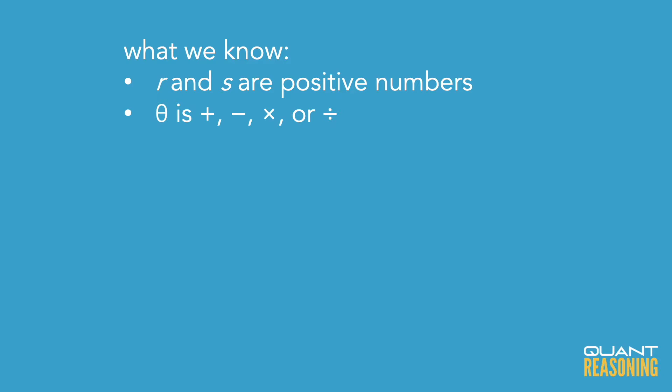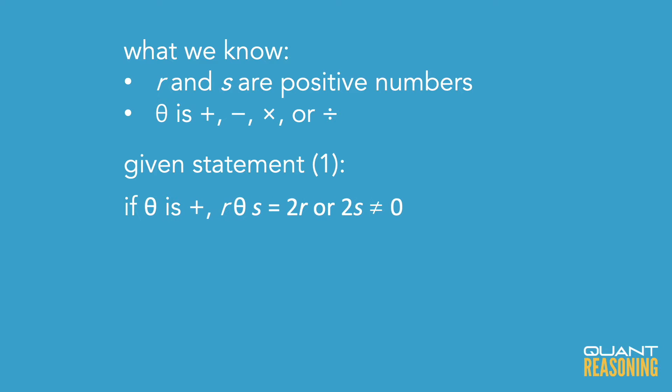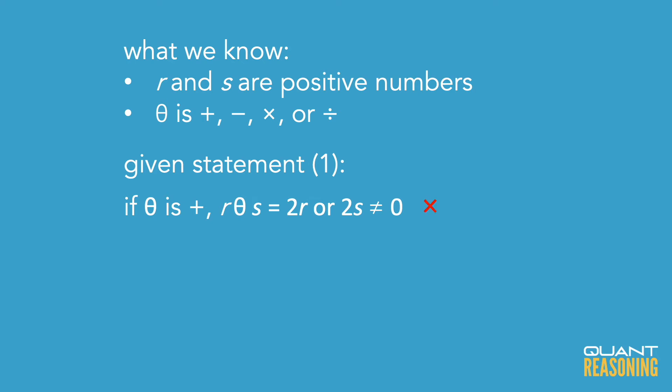Statement one tells us that if r equals s, then that symbol between r and s would make it zero. So what could that symbol be? Could it be addition? If r equals s and we're adding them together, that should be 2r or 2s — it wouldn't necessarily be zero. In fact, it couldn't possibly be zero because we were told that r and s are both positive numbers. So adding two positive numbers is never going to be zero. So it can't be addition — eliminate that option.